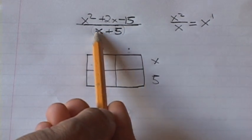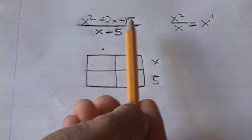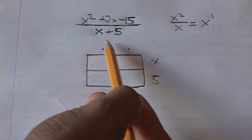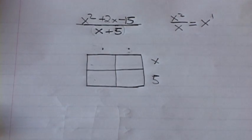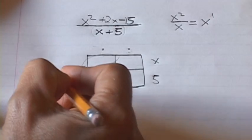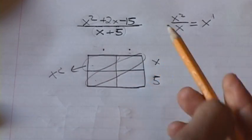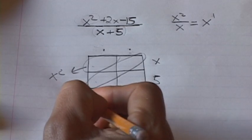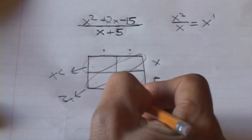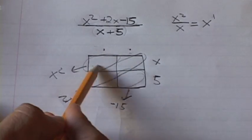So we're going in descending order: x to the first power and then a constant, just like we have x squared, then x, then negative 15 in the numerator. Now we need to figure out what goes in the boxes. We remember from multiplication that the first box is going to equal x squared — the first term of the numerator. The two diagonal boxes are going to add up to 2x. And then the last box is going to equal negative 15.